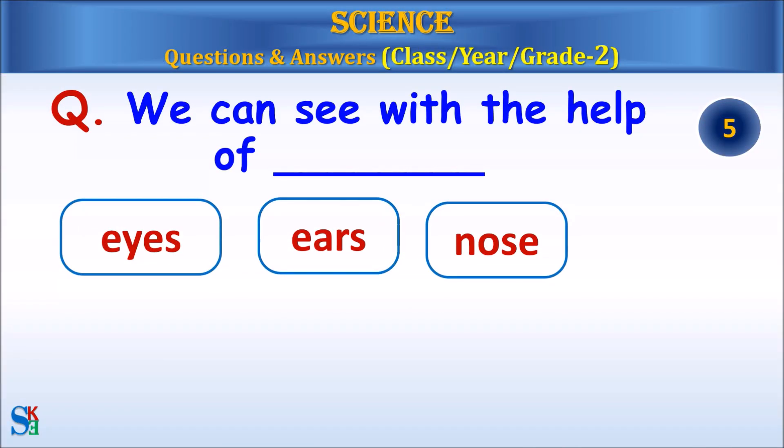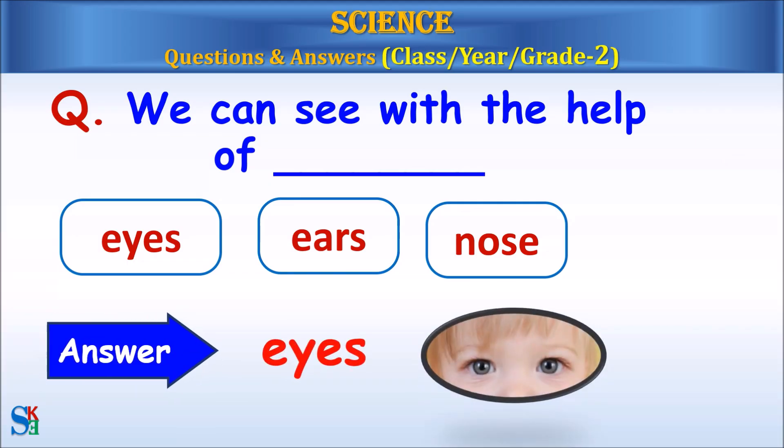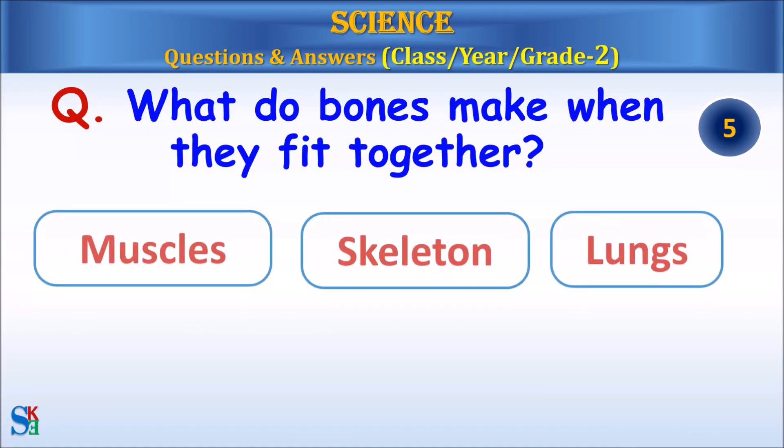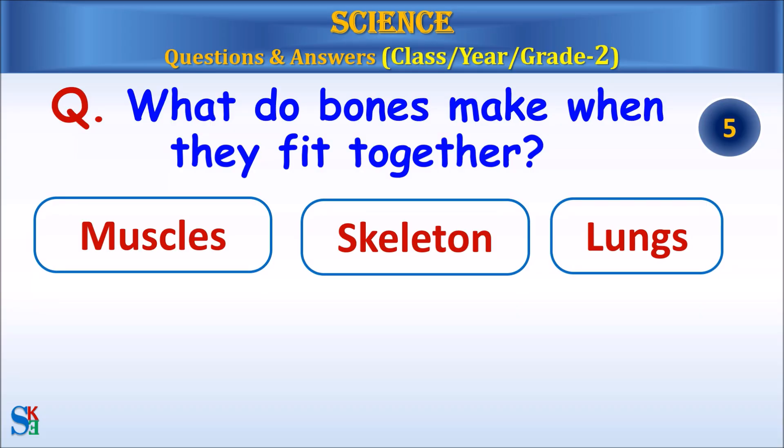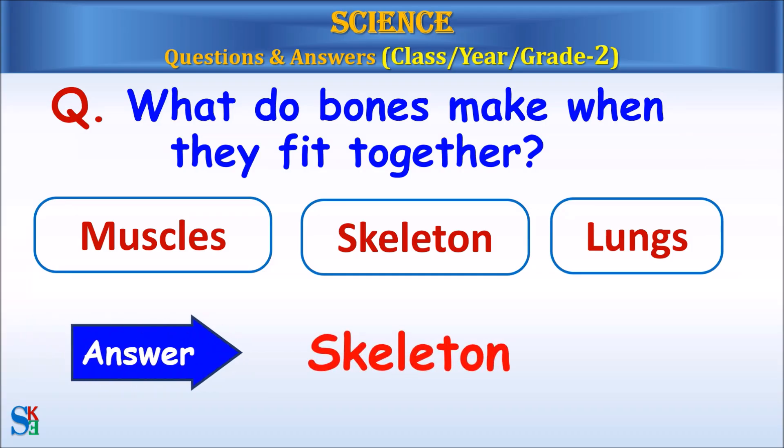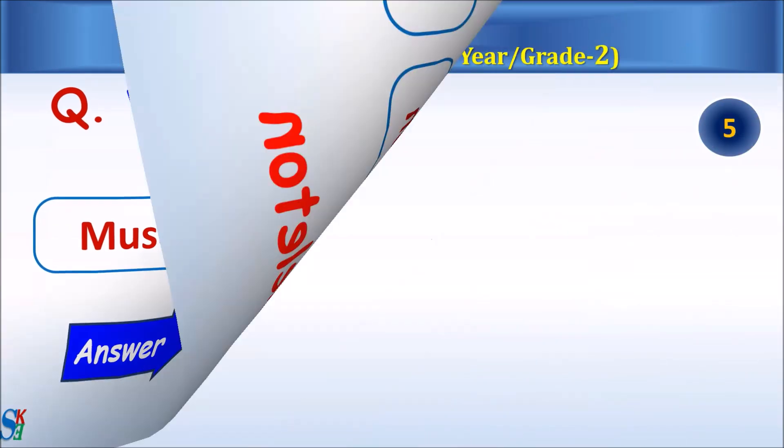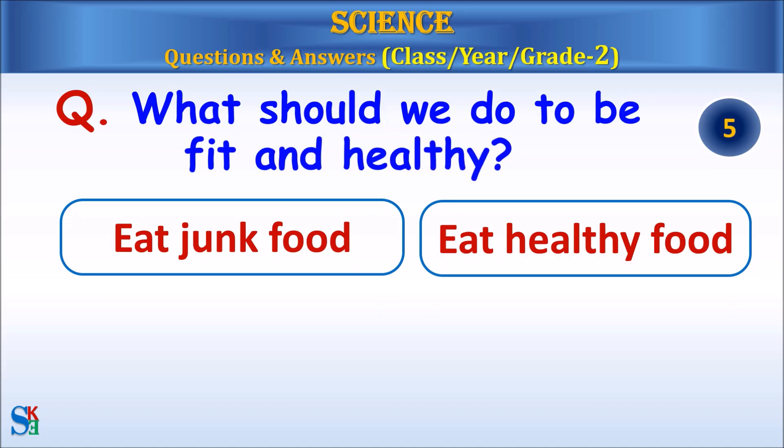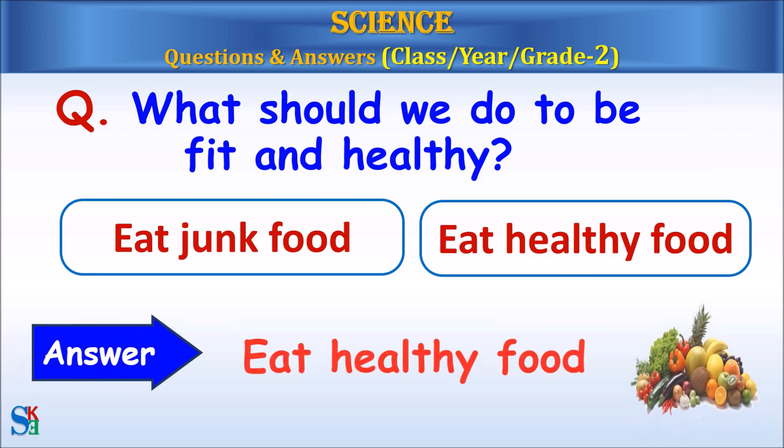We can see with the help of eyes, ears or nose. Answer, eyes. What do bones make when they fit together? Muscles, skeleton or lungs? Answer, skeleton. What should we do to be fit and healthy? Eat junk food or eat healthy food? Answer, eat healthy food.